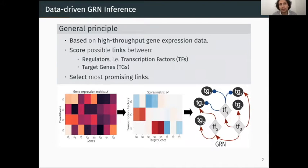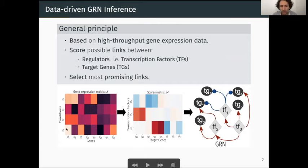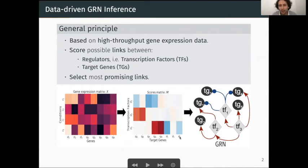How can we infer GRNs from data? The data-driven way to infer GRNs starts with a gene expression matrix which records, for each transcription factor and each target gene, the level of expression in different conditions — which could be different tissues or different sources of food, for example. We then use this data to compute a score matrix recording the relatedness between each transcription factor and each target gene. The highest scores are chosen in order to infer the GRN, inferring the links between regulators and target genes.